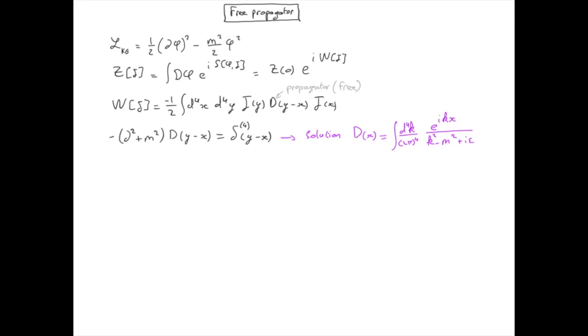However, the physics doesn't depend on epsilon, so every calculation which ends up in a physical observable should be independent of epsilon. That is, the limit where epsilon goes to zero is always well defined.